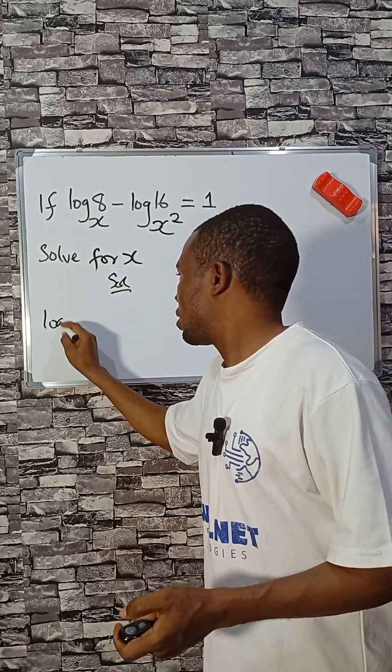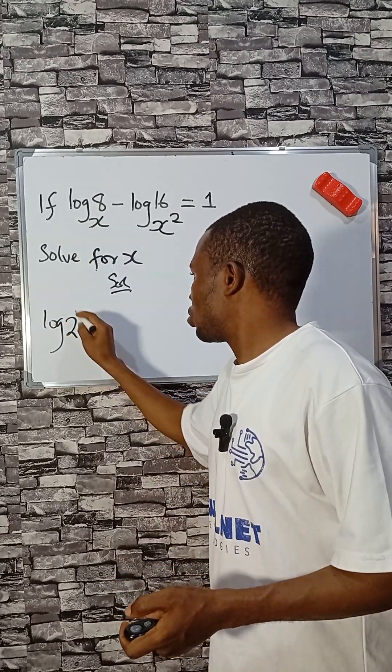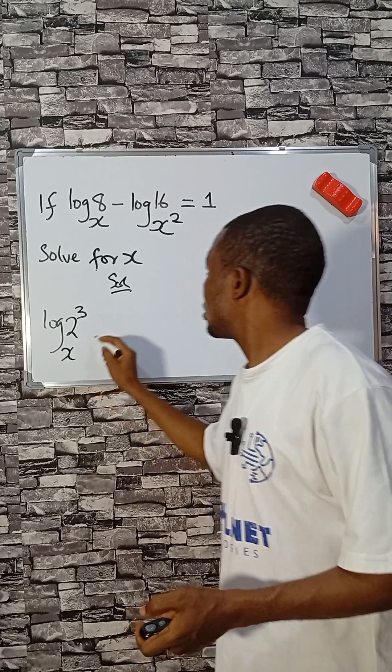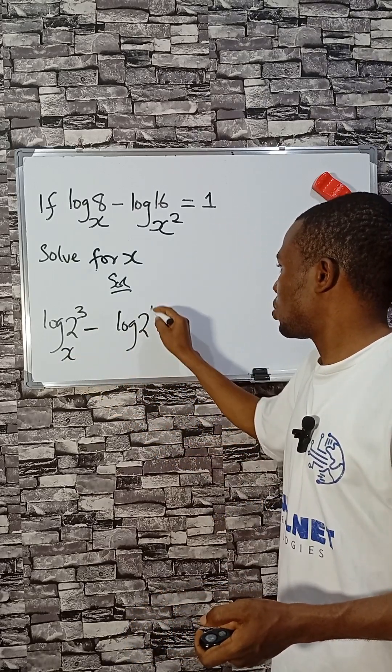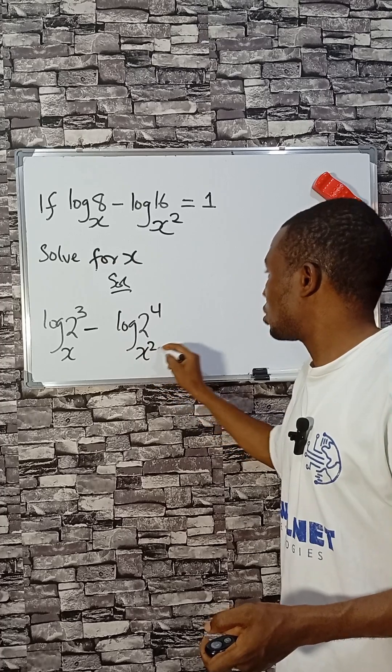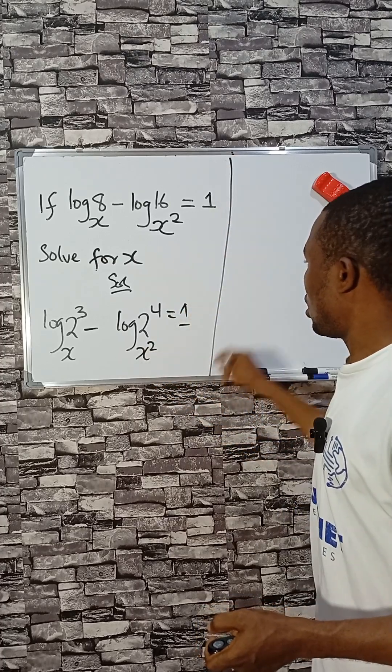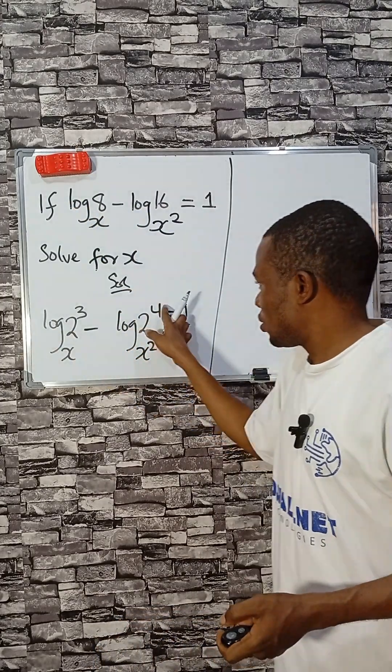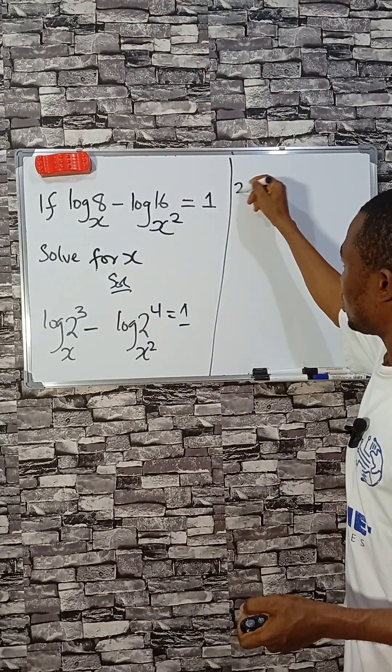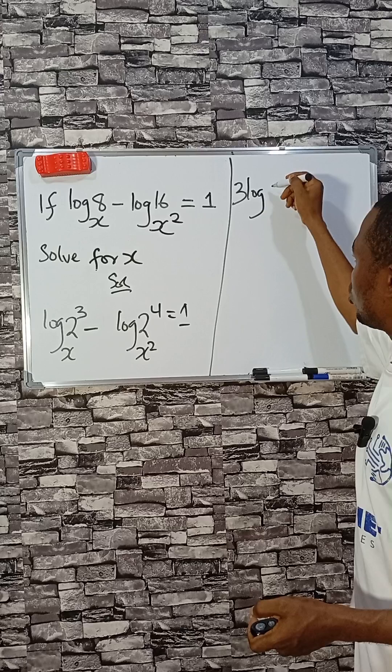Solution: log 8 can be expressed as 2^3, the base is X, minus 16 can be expressed as 2 raised to the power 4. This is X^2 equals 1. Now logarithm permits us to take the power to the back. So we have 3 log 2 base X minus 4 log 2 base X^2.